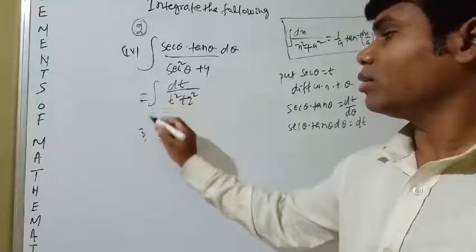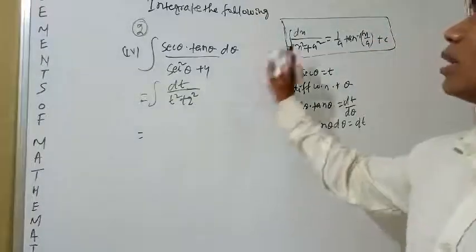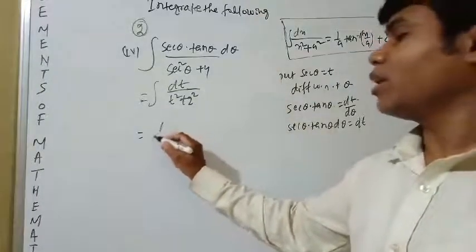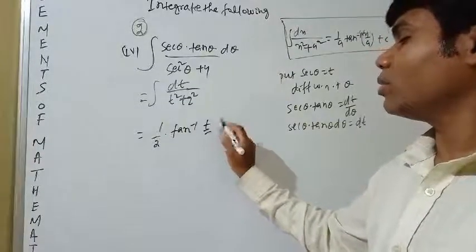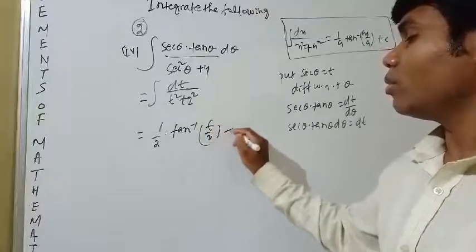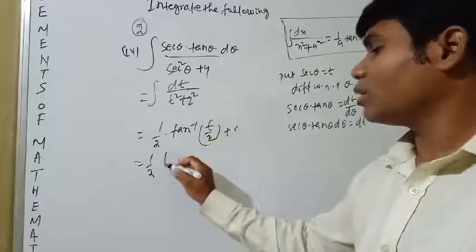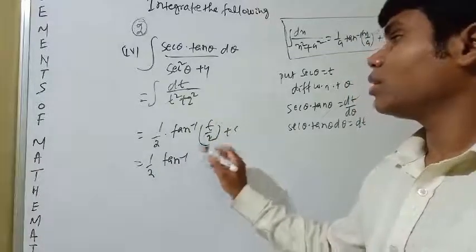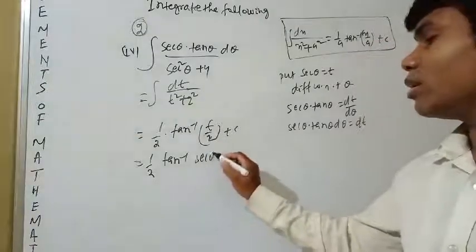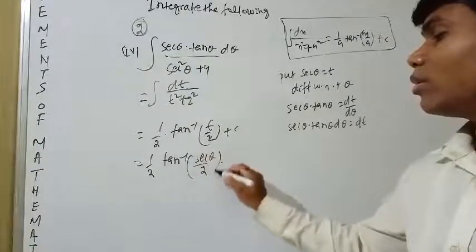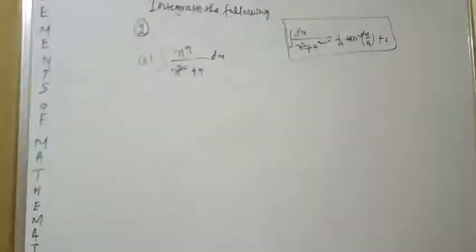Using the formula with a = 2: (1/2) tan⁻¹(t/2) + c = (1/2) tan⁻¹(sec θ / 2) + c.